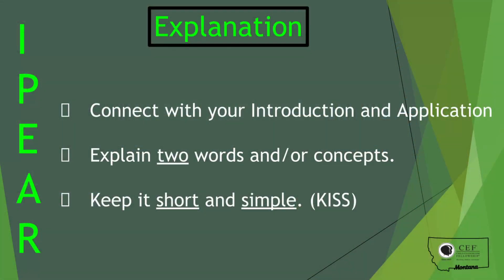Once the kids verify it matches, say, 'We can trust this because it's found in God's word, and we know God's word is true.' For the Explanation part, remember we're looking at only two words or concepts — keep it short. For example, 'Son of Man is just another name for Jesus.' We use the KISS method: Keep It Short and Simple.